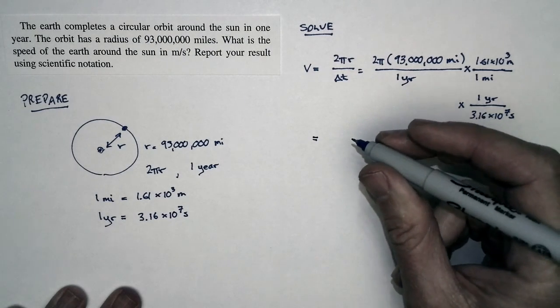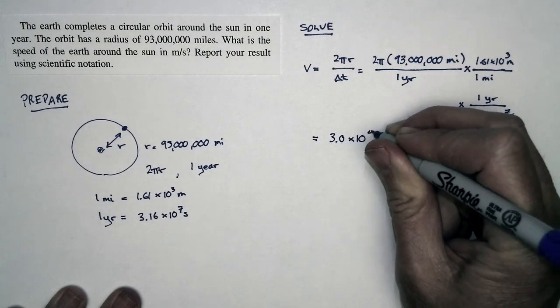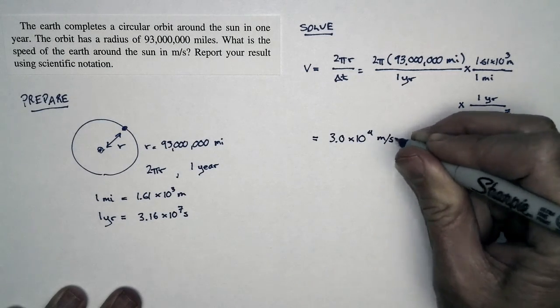And if we multiply this out, we get a speed of 3.0 times 10 to the fourth meters per second.